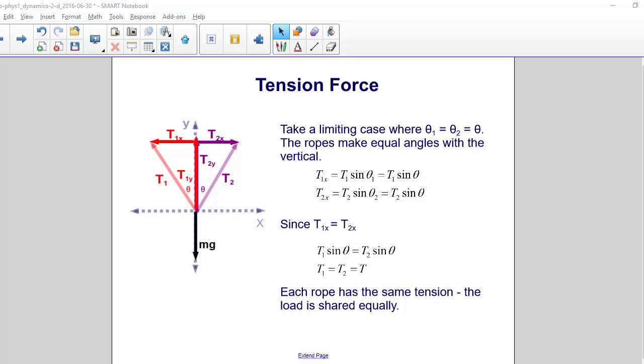cancel out the sin thetas, and you get T1 equals T2 equals T. Each rope has the same tension. The load is shared equally.